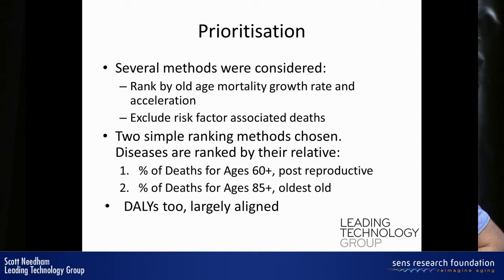In the end, we took a very simple approach to prioritising age-related disease — and simple is nice, because it's hard to hide bias in simplicity. The first method was to prioritise diseases by the percentage of deaths they caused for those over the age of 60, representing post-reproductive age. The second was for those over the age of 85, based on further work by Horiuchi showing a significant difference in mortality growth rate between the old and the oldest old. We also looked at DALYs — Disability Adjusted Life Years — and the results were very similar, largely aligning with the mortality data.